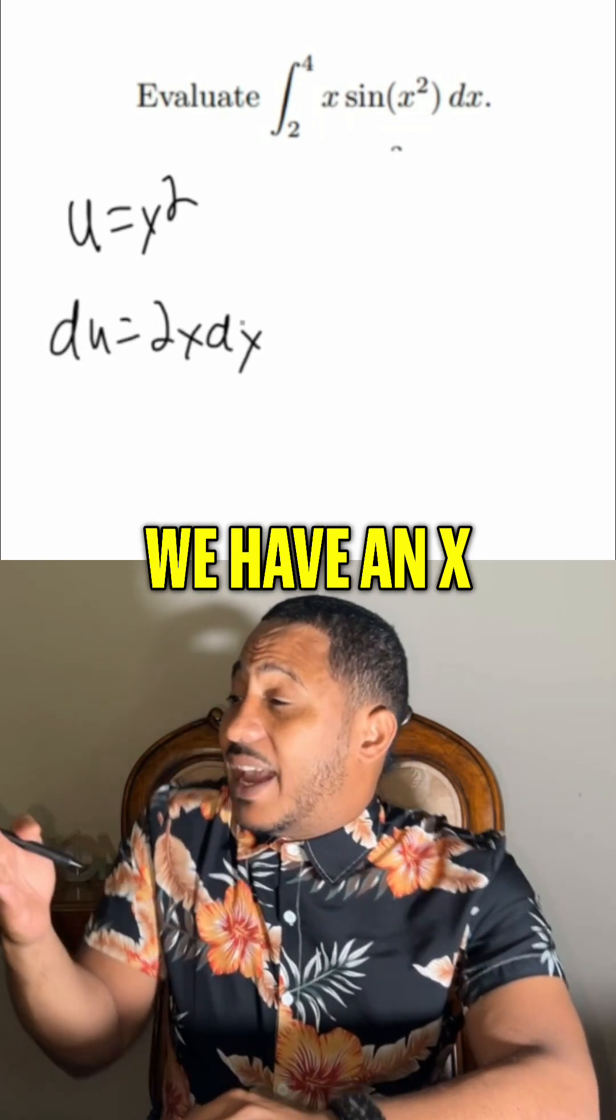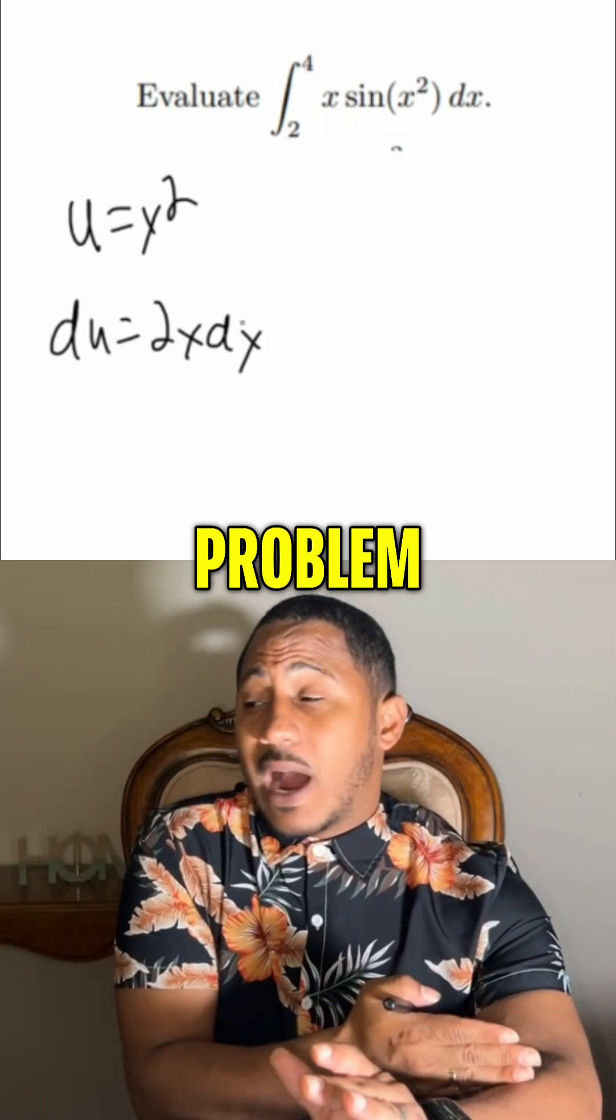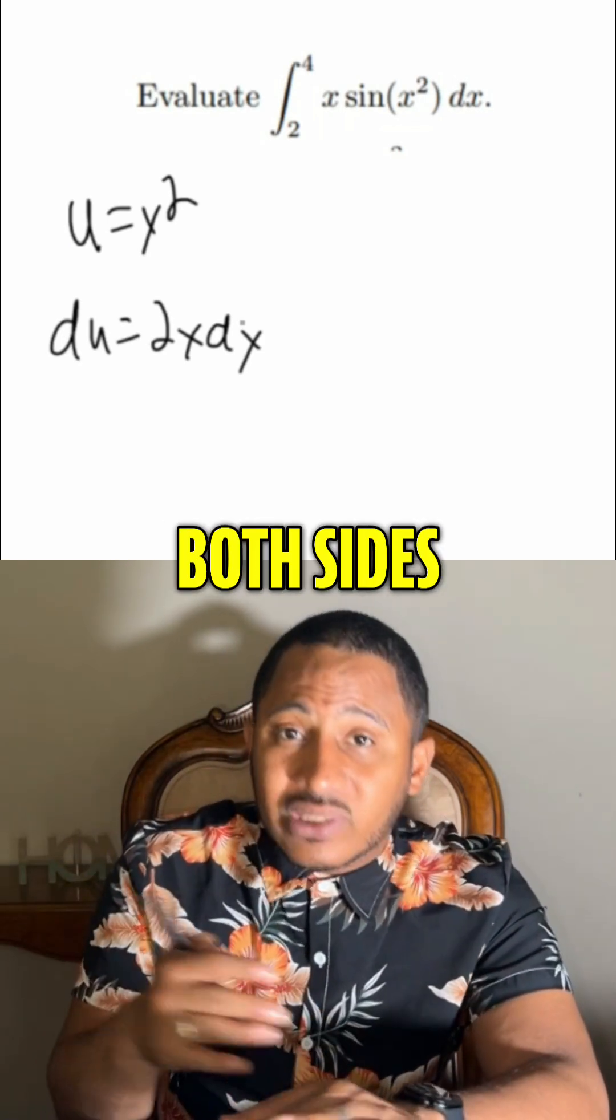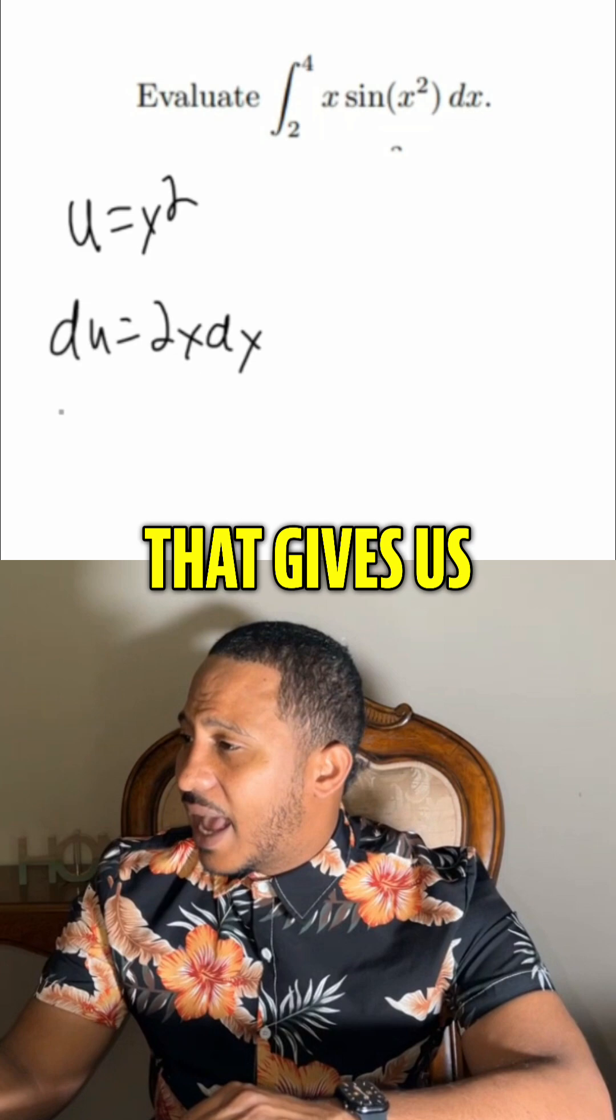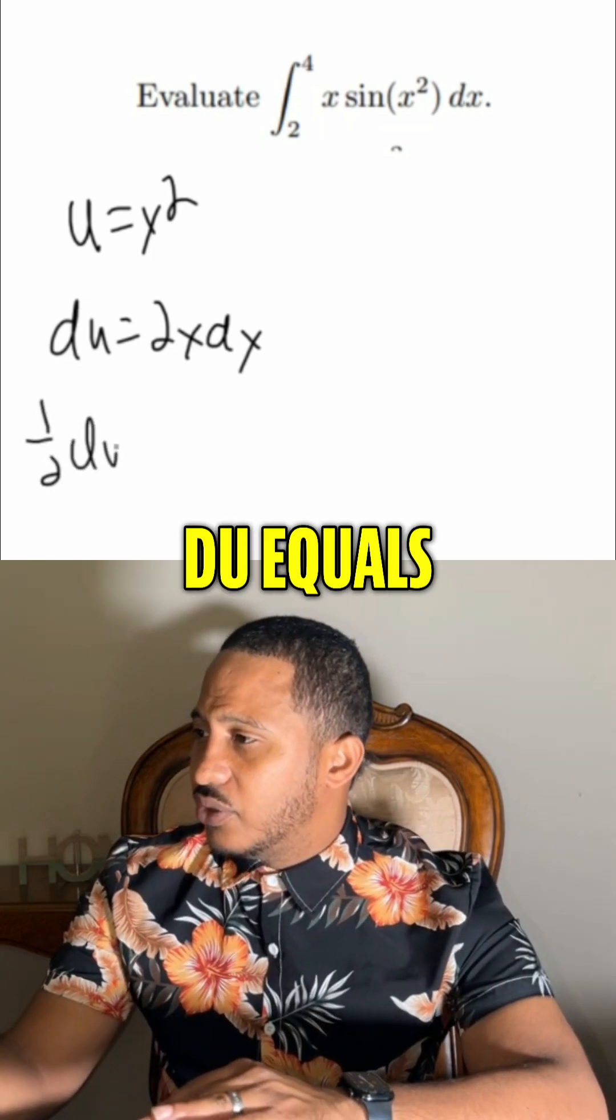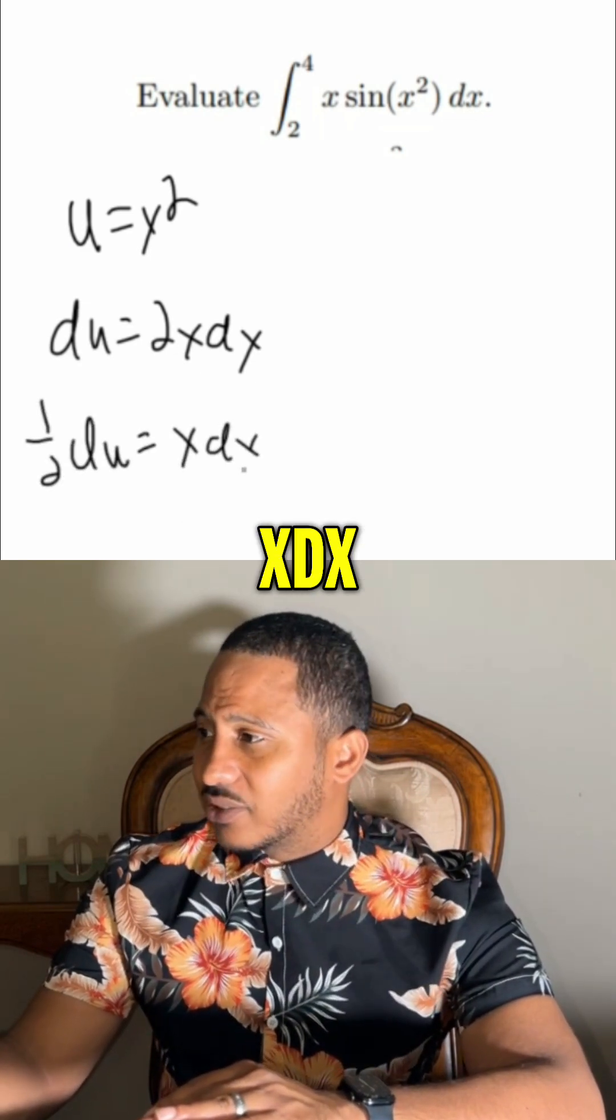Now, luckily for us, we have an x and a dx already in our problem. So we can just get rid of that 2 by dividing both sides by 2. That gives us half du equals x dx.